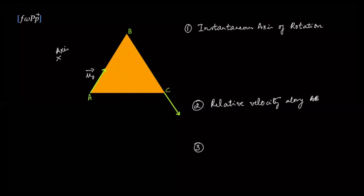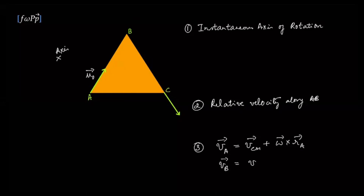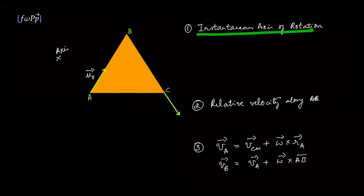The third way is the most general: the velocity of any point on the rigid object equals the center of mass velocity plus the velocity due to rotation about the center of mass, where the vector is from the center of mass to that point. Alternatively, the velocity of B equals the velocity of A plus ω × AB vector. This is not a new method — these are all similar. However, this is the fastest way to solve this problem.